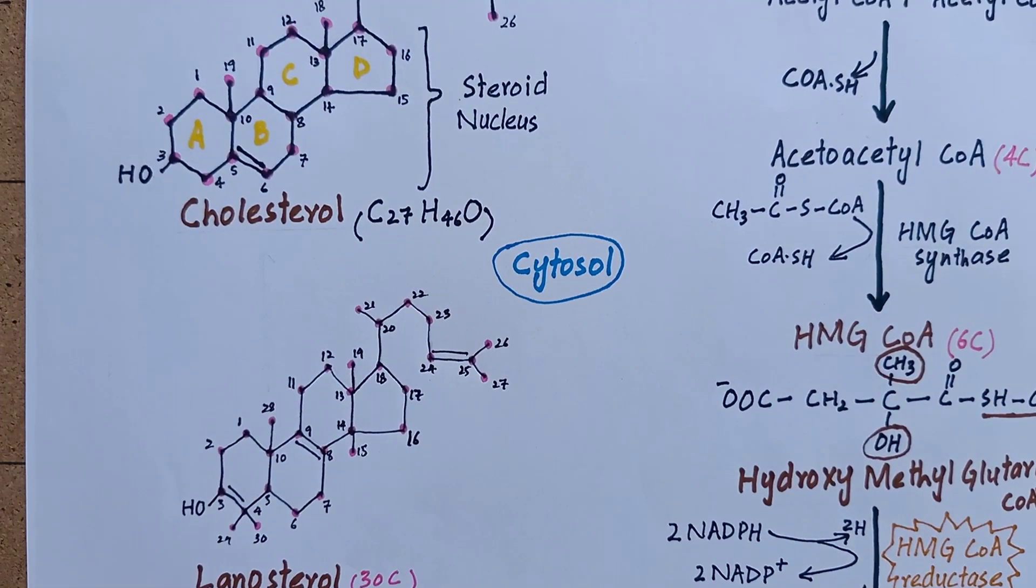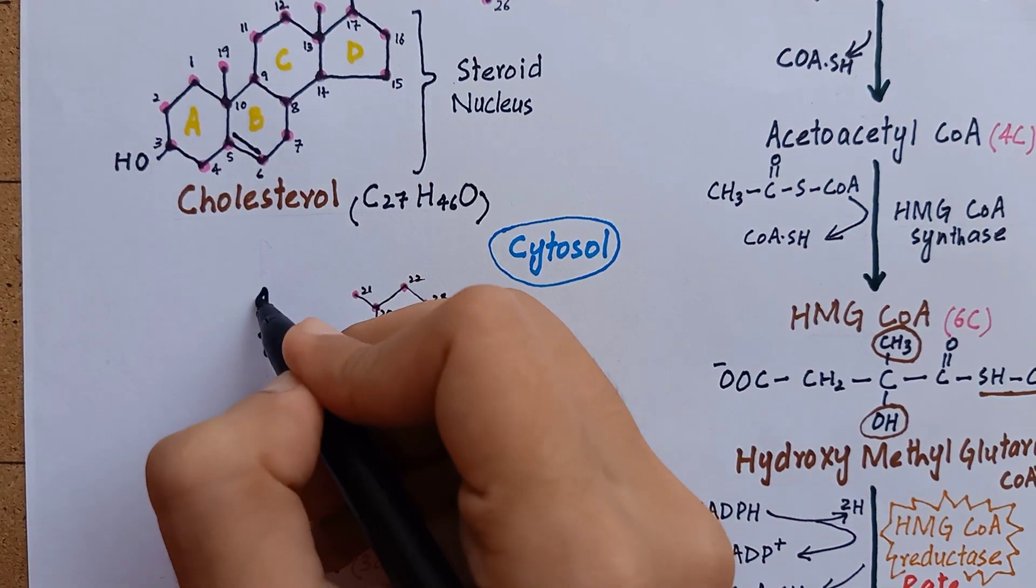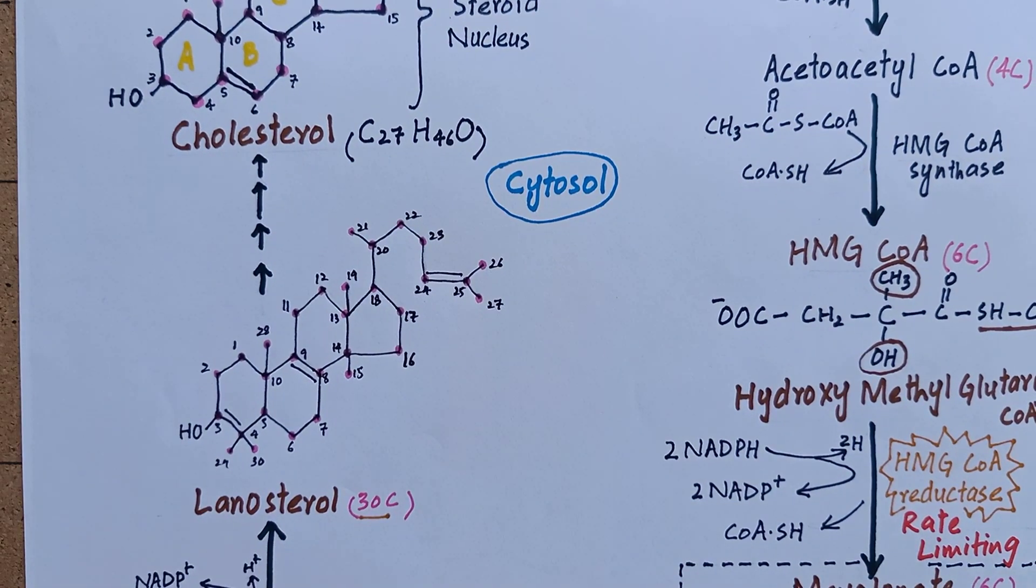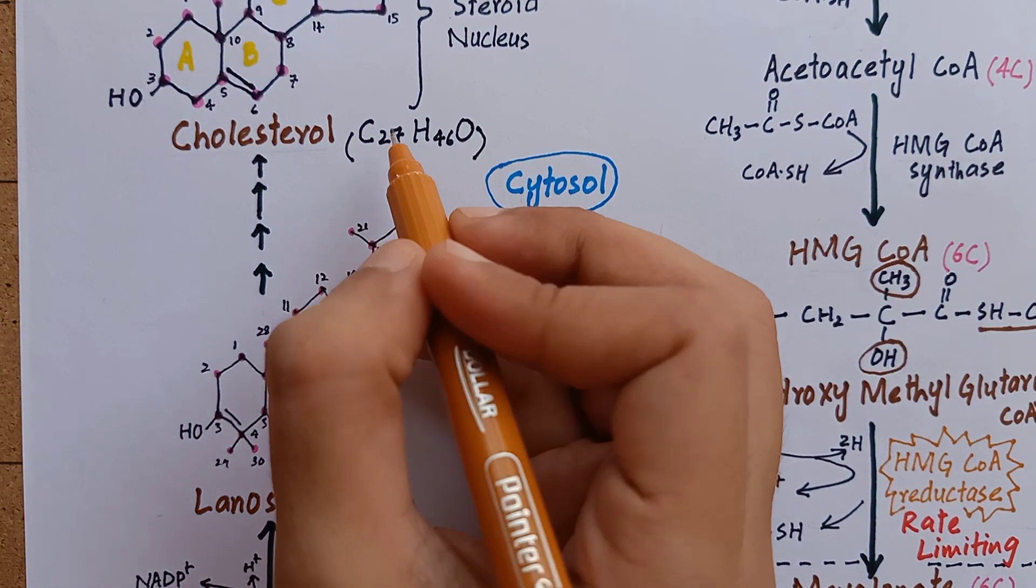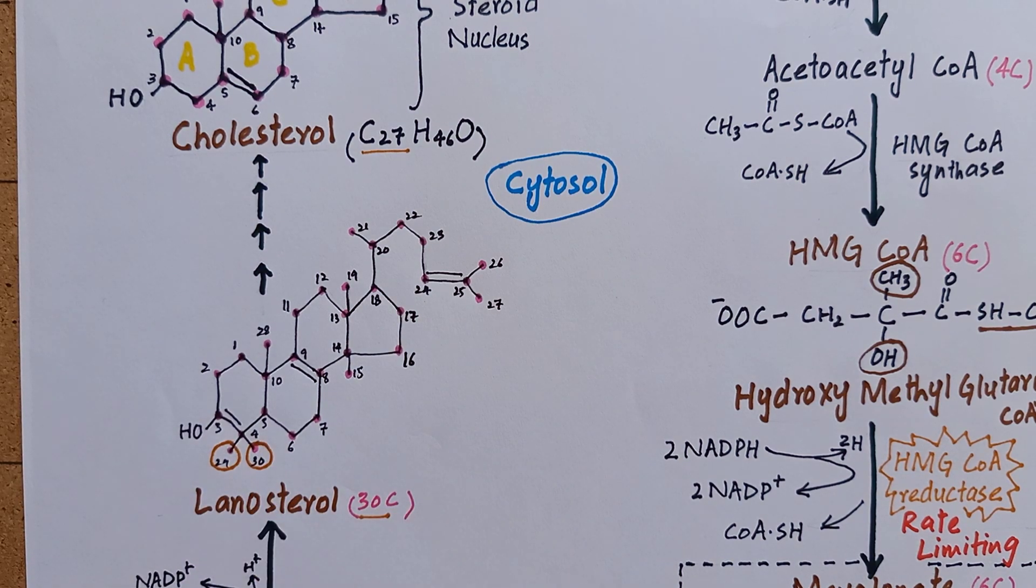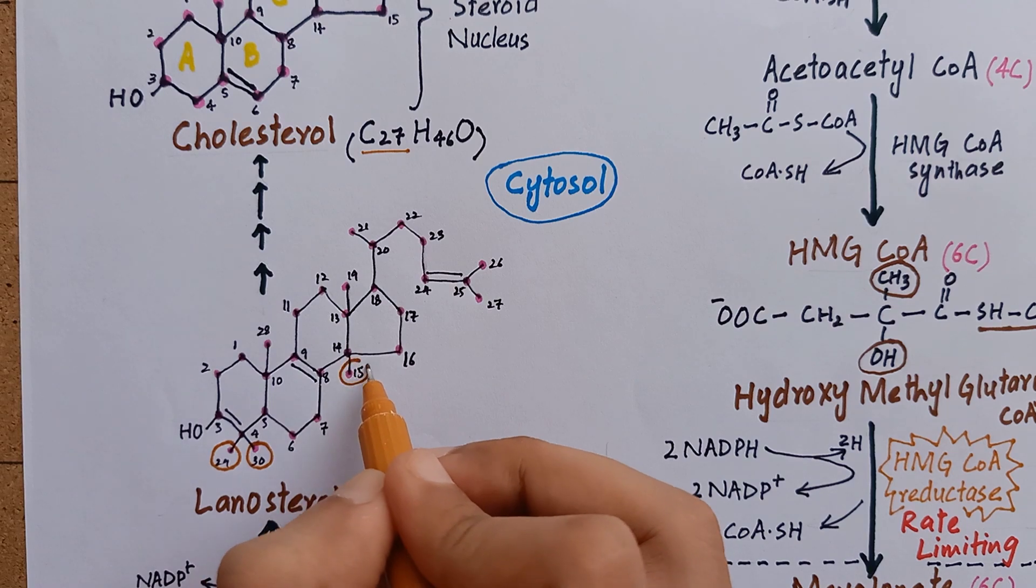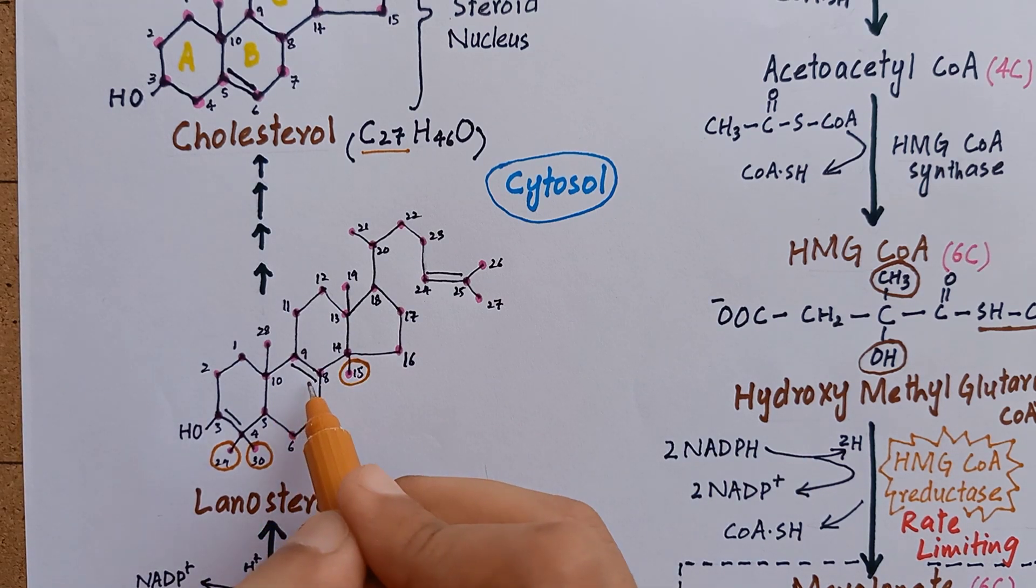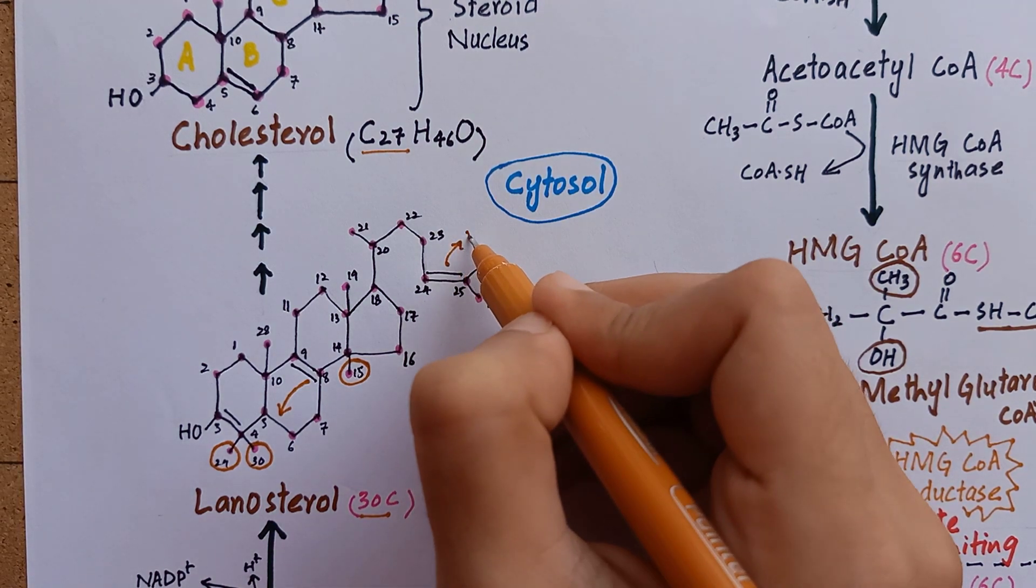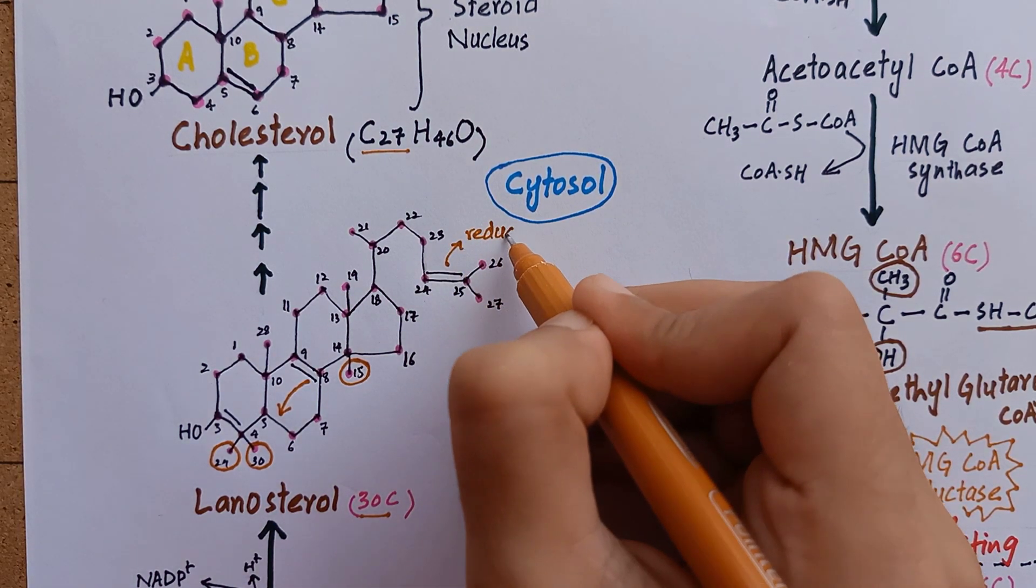The formation of cholesterol from lanosterol is a complex multi-step process with the following important reactions. First is the reduction of carbon atoms from 30 to 27. Second is the removal of two methyl groups from C4 and one methyl group from C14. Third is the shift of double bond from C8 to C5. And fourth is the reduction in double bond present between carbon-24 and carbon-25.